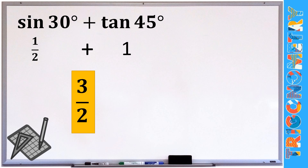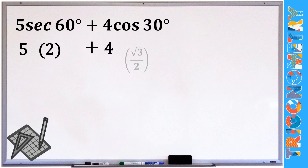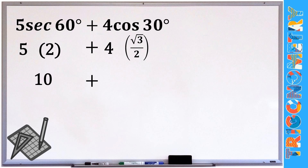Next example: 5 secant 60° + 4 cosine 30°. Secant 60° = 2 and cosine 30° = √3/2. So we have 5×2 + 4×(√3/2) = 10 + 2√3. We cannot add 10 and 2√3 because we cannot combine a non-radical with a radical value. So 10 + 2√3 is our final answer.